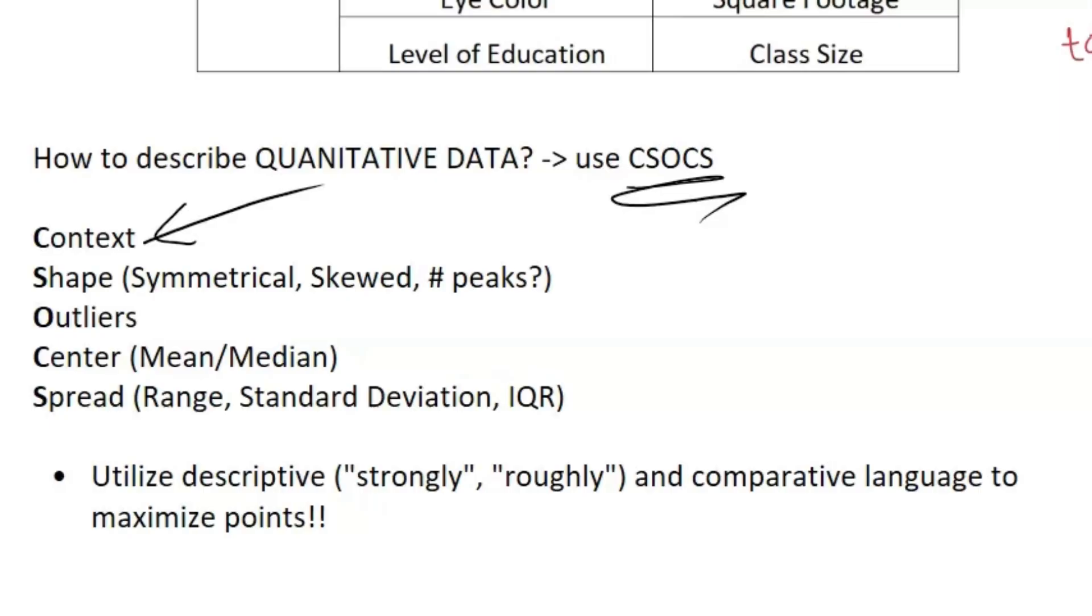The C stands for context. Shape or S stands for shape. So is it symmetrical? Is it skewed? The number of peaks - is it unimodal, bimodal, all that. Look at the outliers. Any numbers or data points that are super out wide compared to the rest of the data. You have your center, so look at your mean or your median.